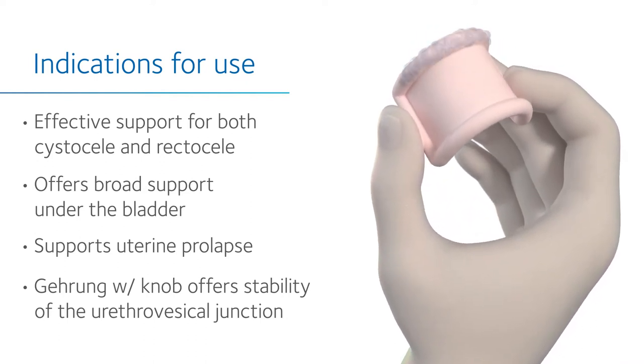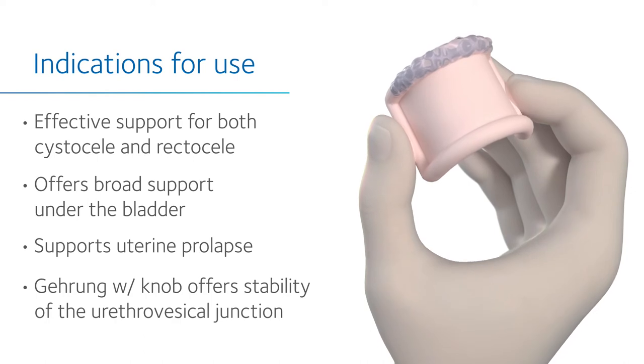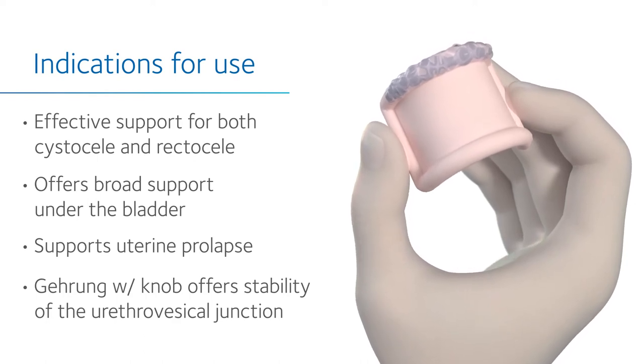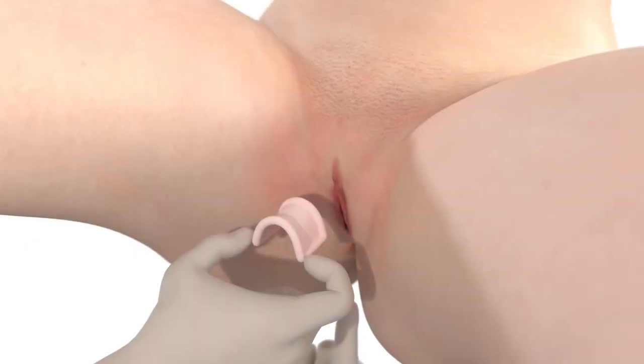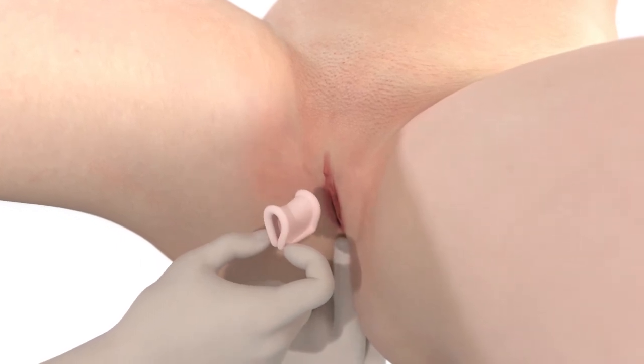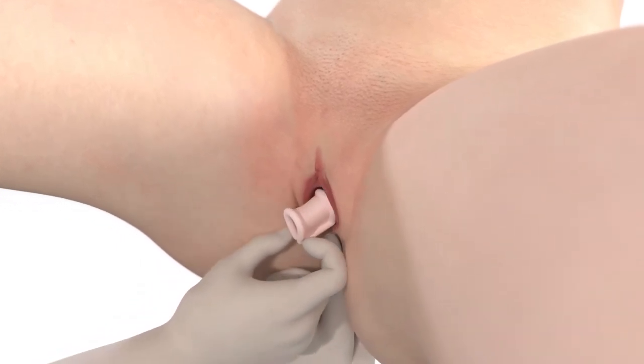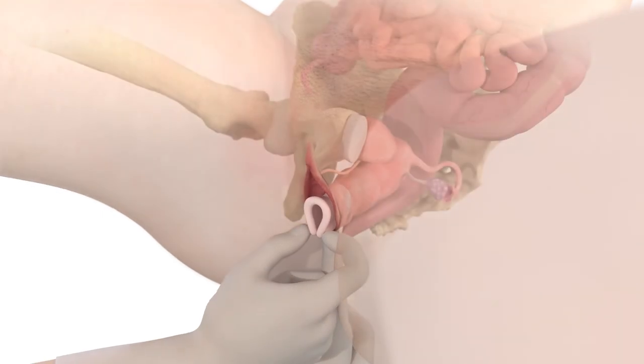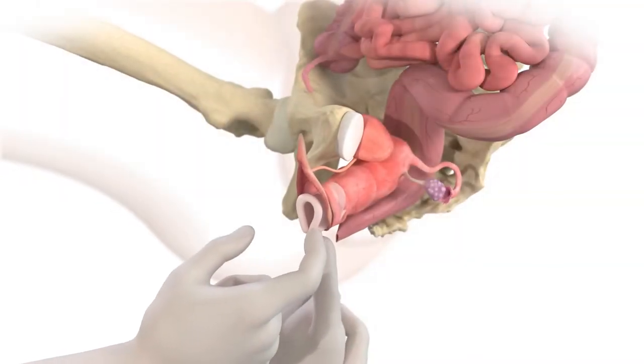To insert the pessary, wear dry gloves and lubricate only the leading end of the pessary. Use one finger to depress the perineum. The pessary is folded and inserted into the vagina with both heels parallel to the pelvic floor, left heel first.